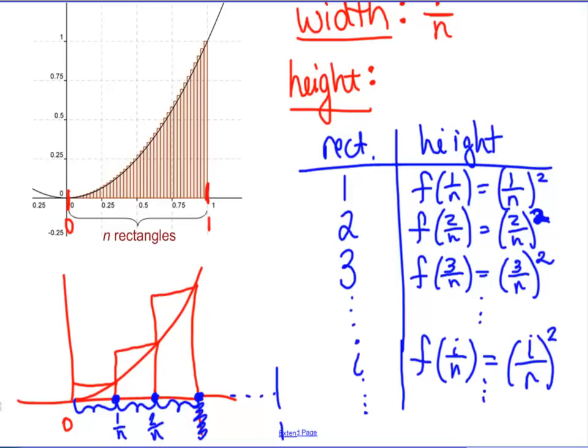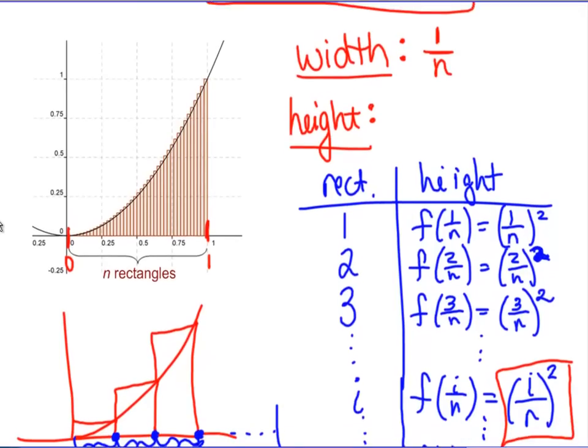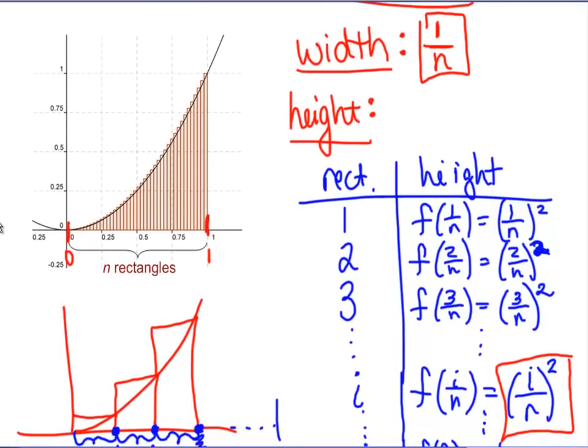And if we wanted to do all of them, say we did, the last one is n. And that's going to be f of n over n. Hey, that's just 1, right? So we have the width. We have the height. In particular, I have this formula right here for the height. And I have a formula right here for the width. And if I put all that together...